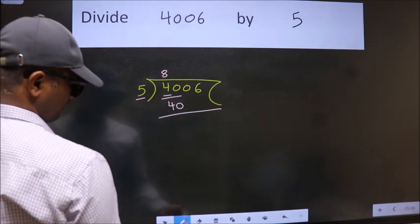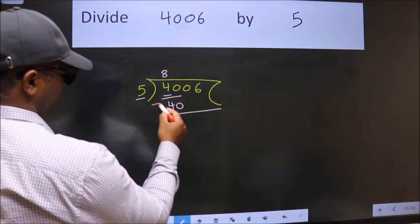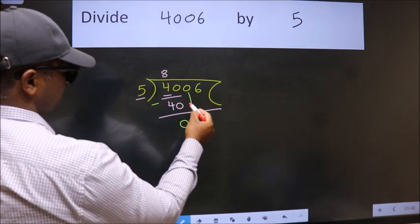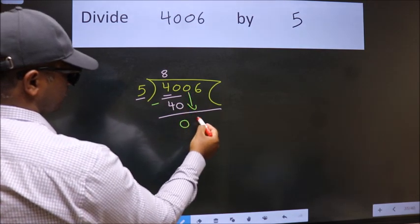Now we should subtract. We get 0. After this, bring down the next number. So, 0 down.